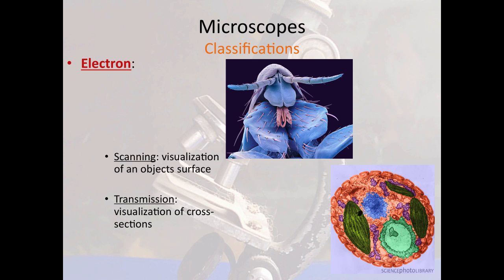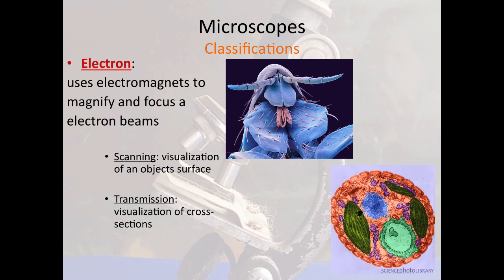The second broad category are electron microscopes. These use electromagnets to magnify and focus electron beams. A scanning microscope gives us a visualization of the surface of an object, while a transmission electron microscope allows us a visualization through a cross-section of some very small object.